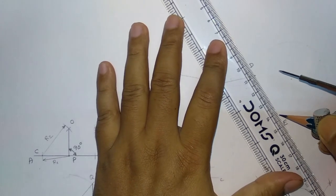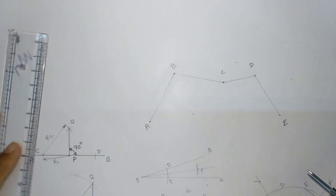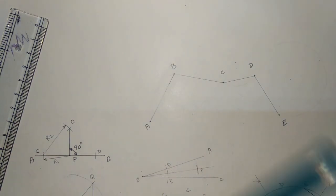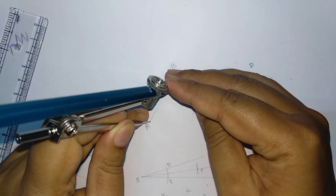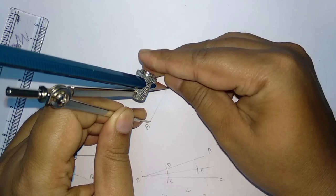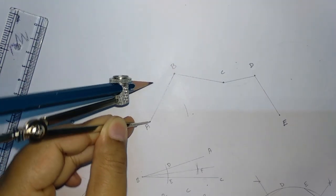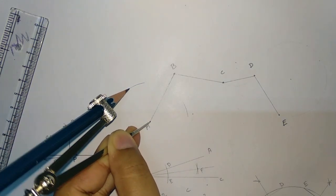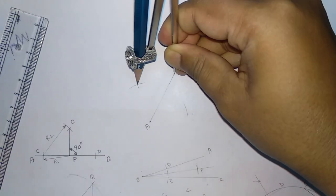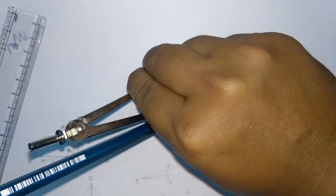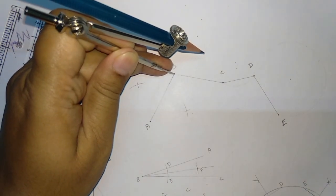And at the end, D to E. This is very easy. Now you have to draw the perpendicular bisector. So how you have to draw the perpendicular bisector, it is already explained in earlier videos. You can see, you have to draw the arc on both sides. Similarly, you have to draw the perpendicular bisector for this one also.